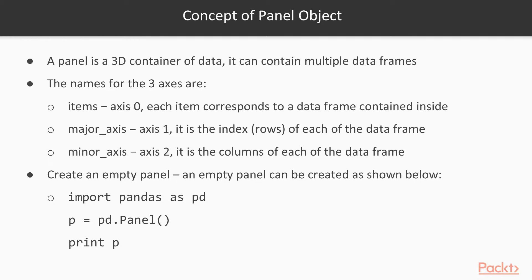The concept of panel object: a panel object is a 3D container of data and it can contain multiple data frames. The names for the three axes are items, major_axis, and minor_axis. Each item represents one data frame. major_axis represents each row of the data frame. minor_axis represents the columns of each data frame. In order to create an empty panel, we import pandas as PD, declare the panel object, and assign PD.Panel to create an empty panel.